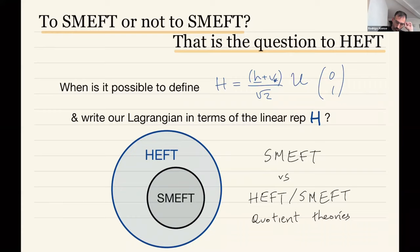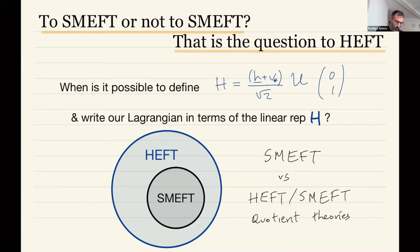Much more on SMEFT will be in Professor Trott's lectures. What I hope becomes clear from this discussion is that SMEFT is a special case or limit that we can take within HEFT, which tries to be more encompassing. HEFT contains SMEFT, so sometimes people refer to 'HEFT modulo SMEFT' — everything that is in HEFT that is not in SMEFT. In my papers I call this the quotient theory, or sometimes 'HEFT over SMEFT.'